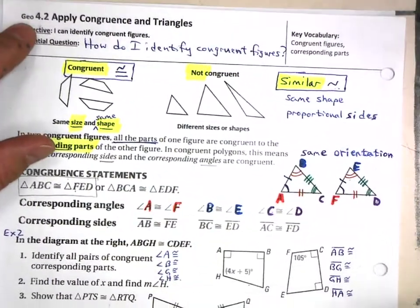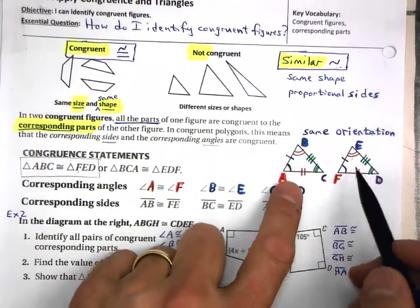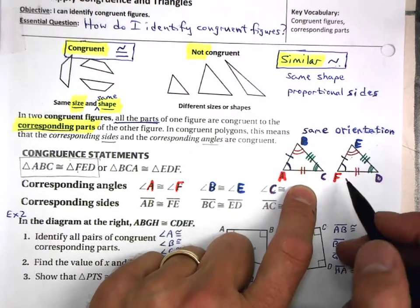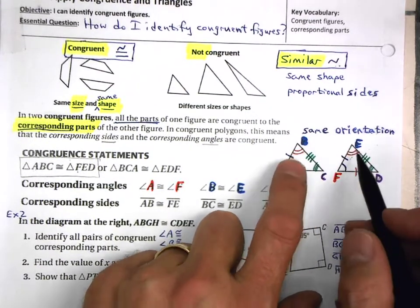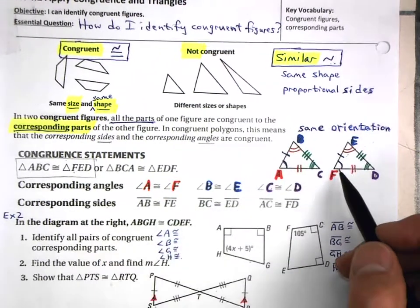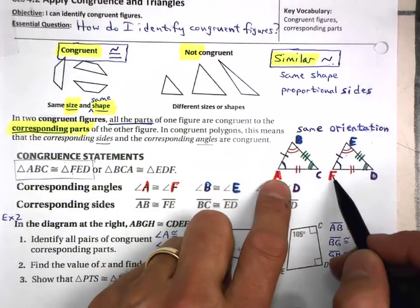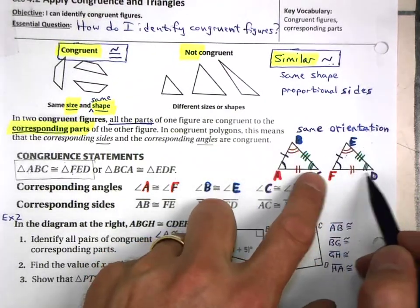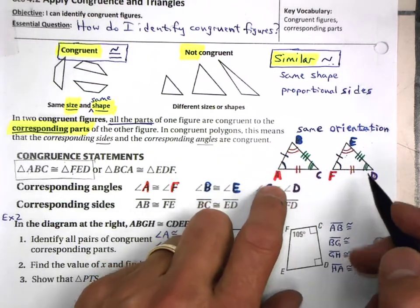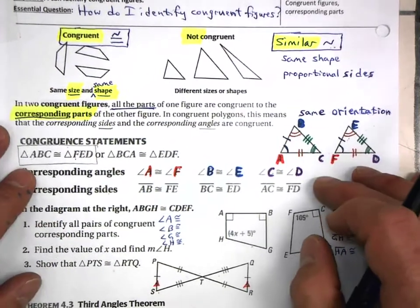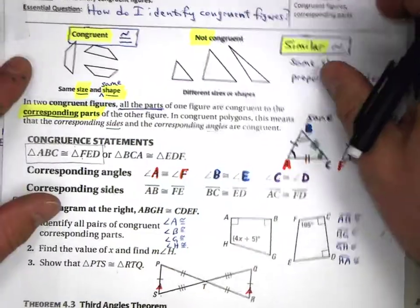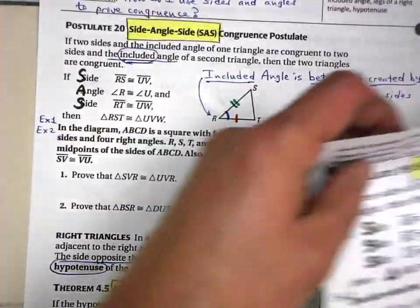Remember back in 4.2, we said that what it means when we say that two triangles are congruent is that there are six pairs of corresponding features that are congruent — three pairs of angles and three pairs of sides. So if you wanted to prove that these triangles were congruent, you'd have to measure all 12 of these different features of those two triangles. That is too long for us.